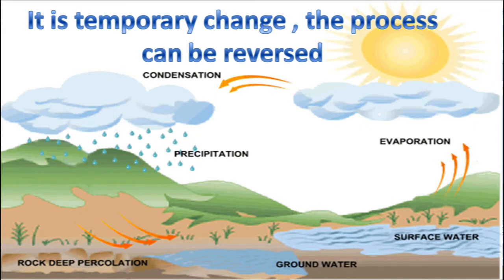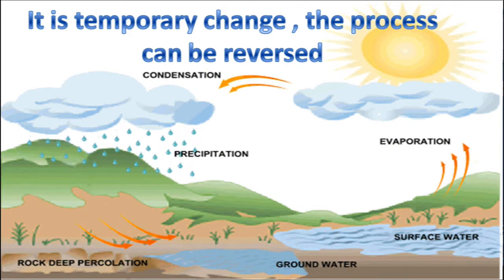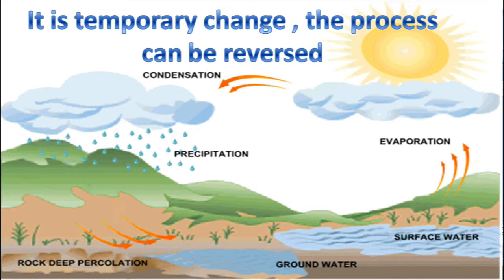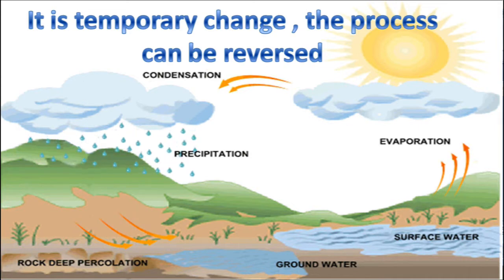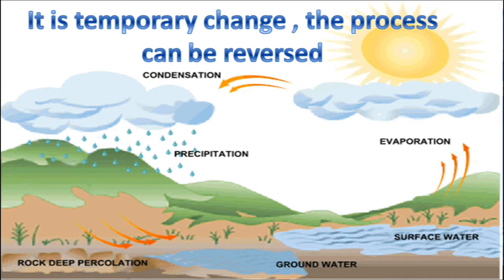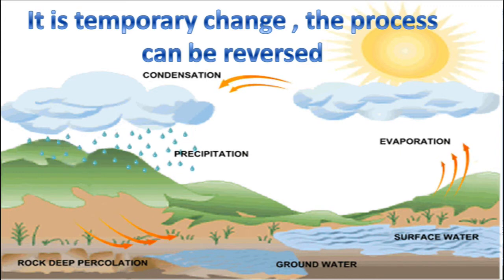Physical change is a temporary change and the process can be reversed. For example, water evaporates, changes into vapour, then into clouds, and again precipitates in the form of rain. In that change, only the physical state of water gets changed. Therefore, the water cycle is also an example of physical change.